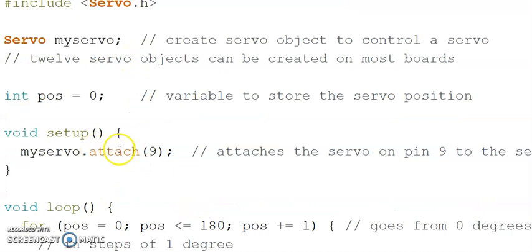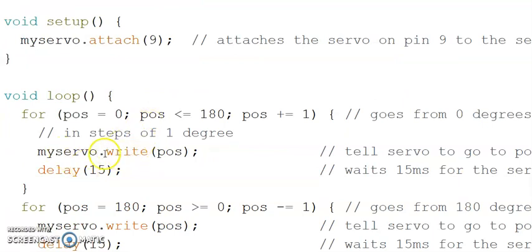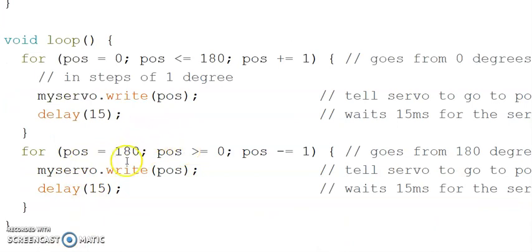Here we have learned two commands: attach(), which attaches the motor to a particular pin, and myServo.write(), where the dot is the accessor operator. myServo.write() writes the position determined by the loop to the servo motor at pin number 9. A delay of 15 ms is kept intentionally to observe the operation. The second for loop rotates the motor back from 180 degrees to 0 degrees with a decrement of 1 degree.